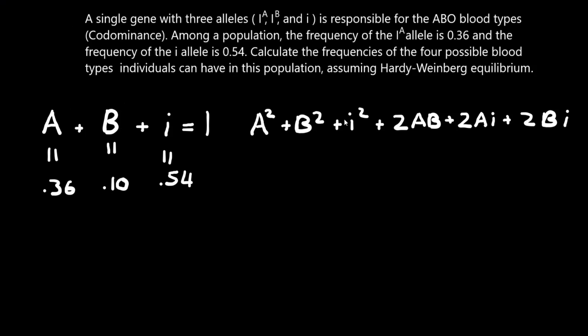And now we can start filling in our genotype frequencies. So A squared will be 0.13, just square 0.36. And B squared will be 0.01, I squared, 0.29.